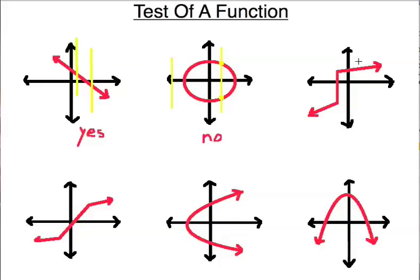Let's look at this next one. If I draw the line here, it's okay. If I draw the line here, it's okay. However, if I draw the line here, it passes through a whole bunch of points and that makes it fail the test. So we have to say no, it's not a function.